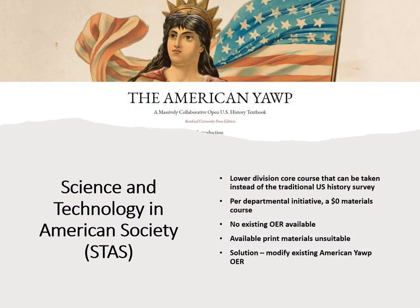Recently, the department has added two new courses to the curriculum: Science and Technology in American Society 1 and 2, which can be taken as an alternative to the traditional U.S. History surveys to fulfill the general ed American history requirement.